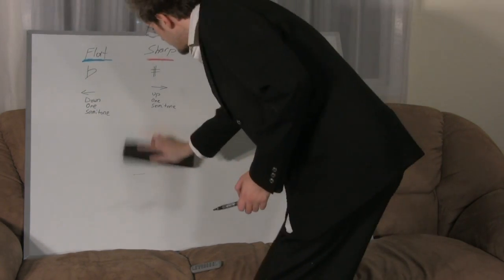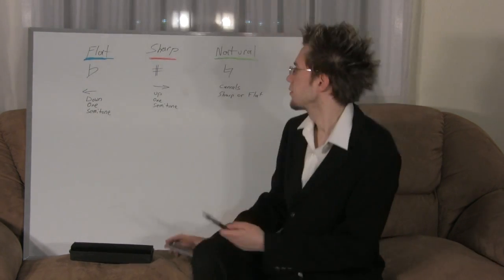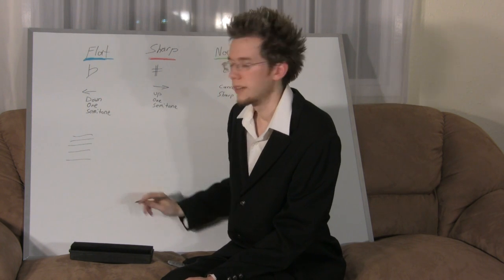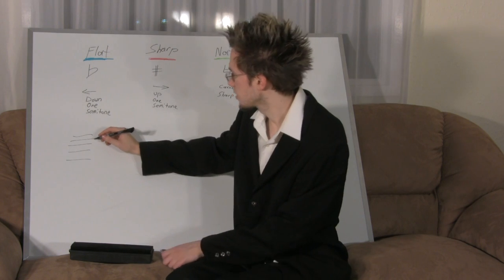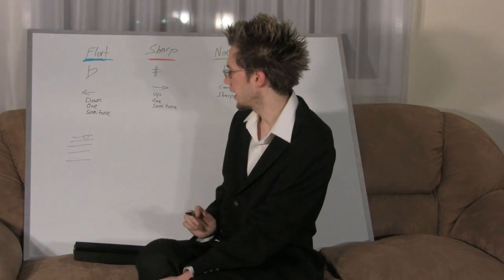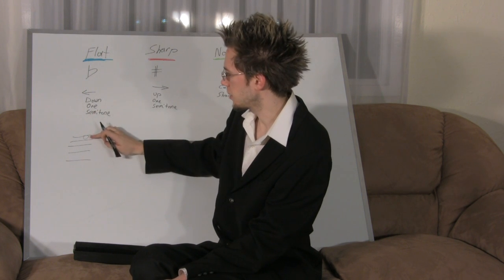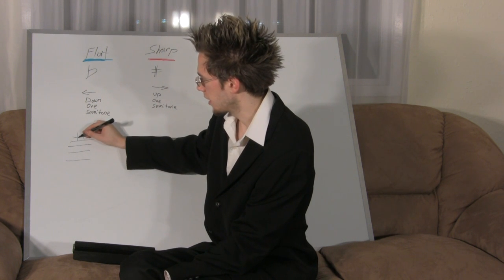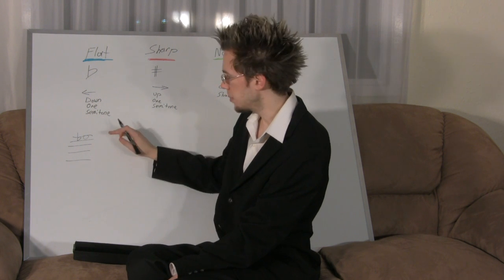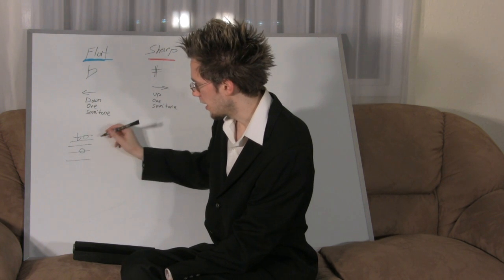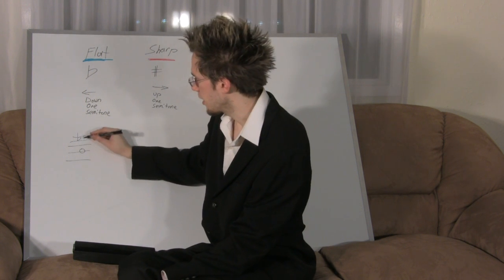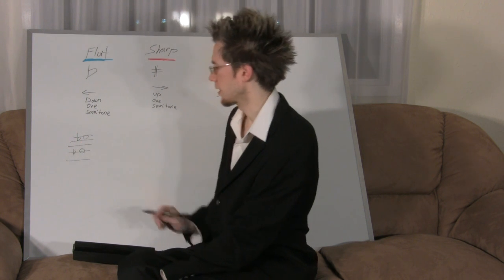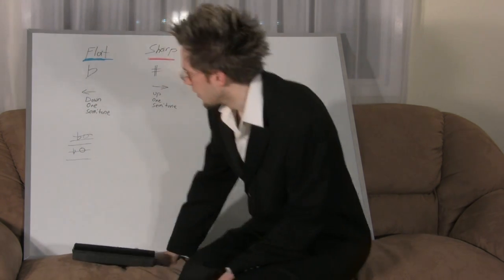Now I want to show you how to draw each of these. A flat: draw a line down, bring it up and then down to the bottom-right — try to keep it in that space. If the note is on a line, thread that line through the curve of the 'b' shape. That's how you draw a flat. Sharps: draw one vertical line down, then another beside it spanning from one space to the next, leaving the space in the middle, then draw two horizontal lines — one straddling above and one below that center space.